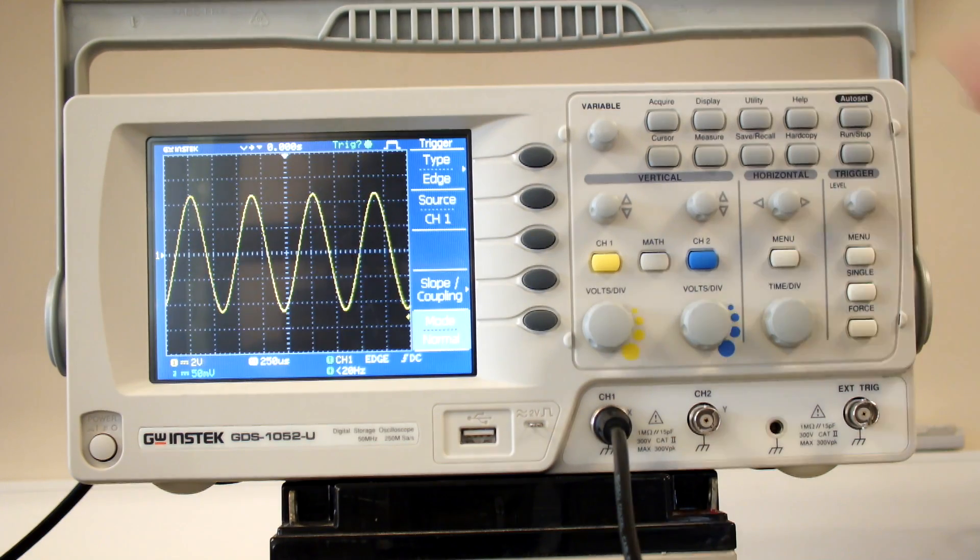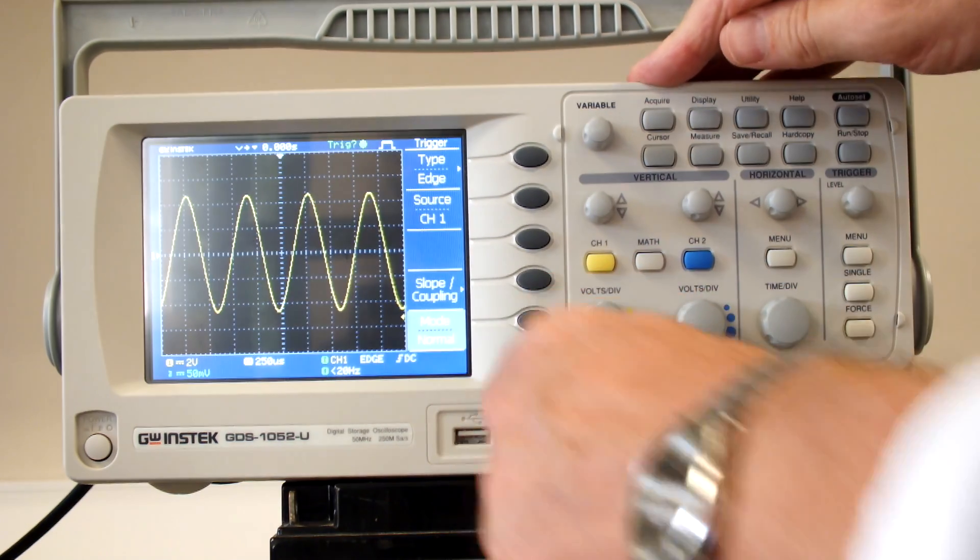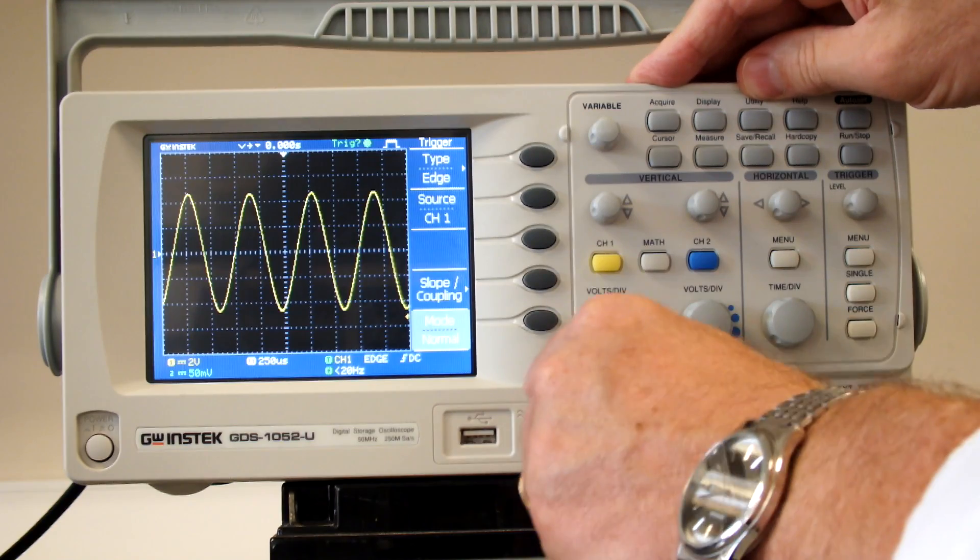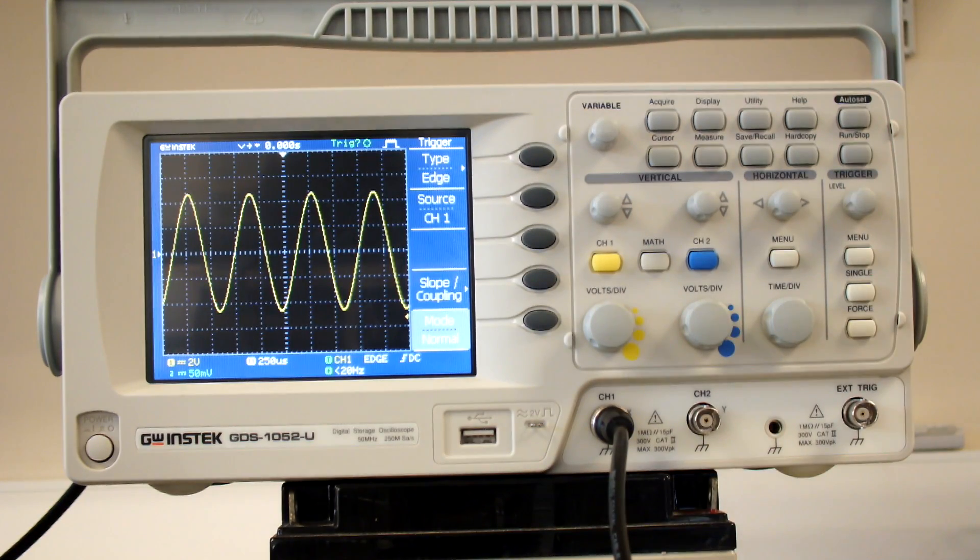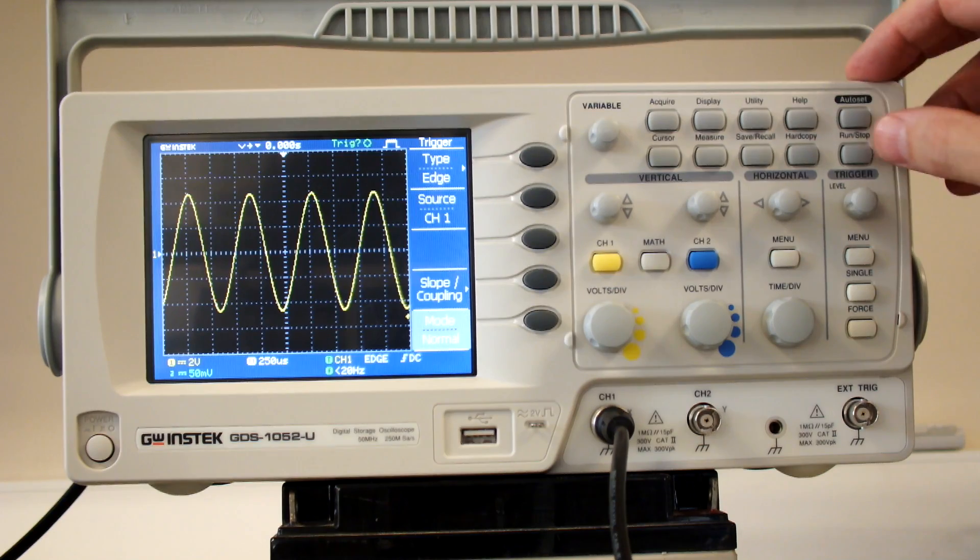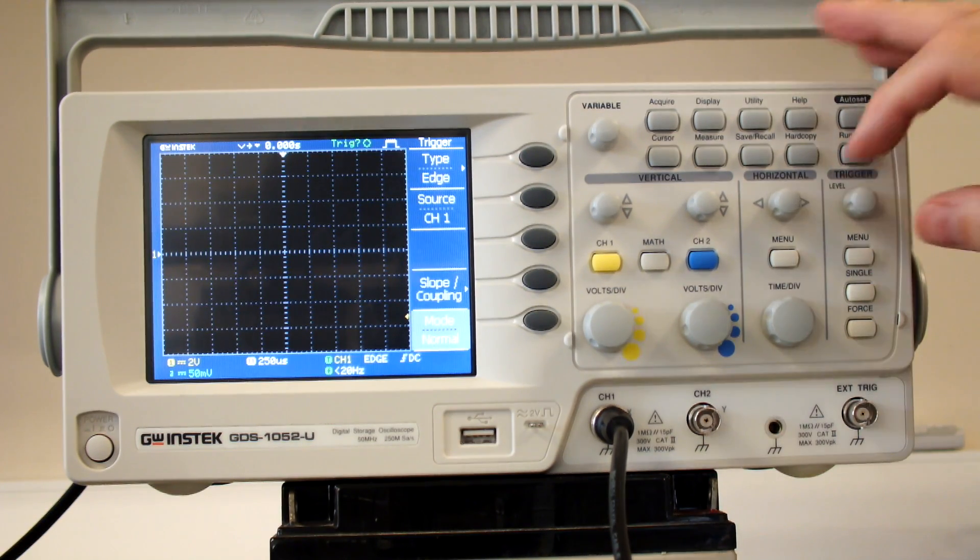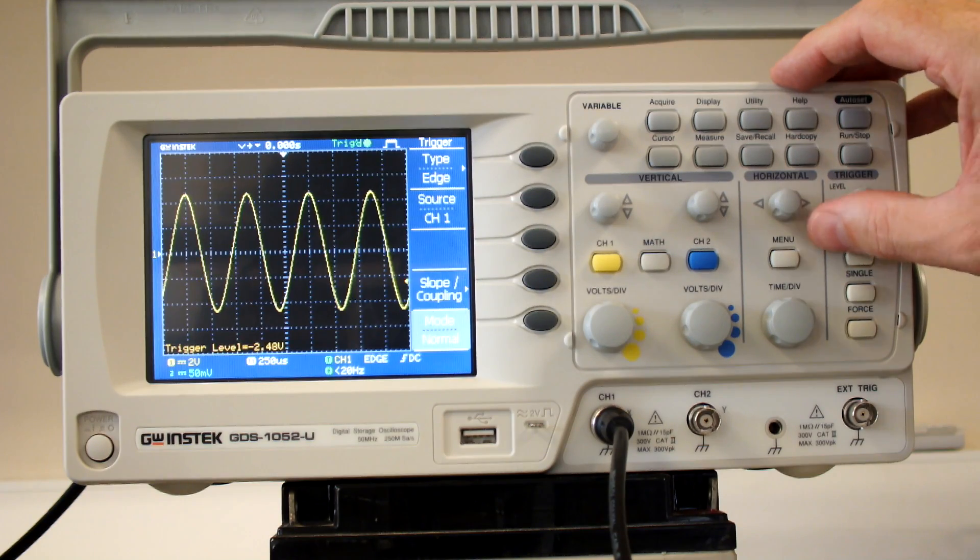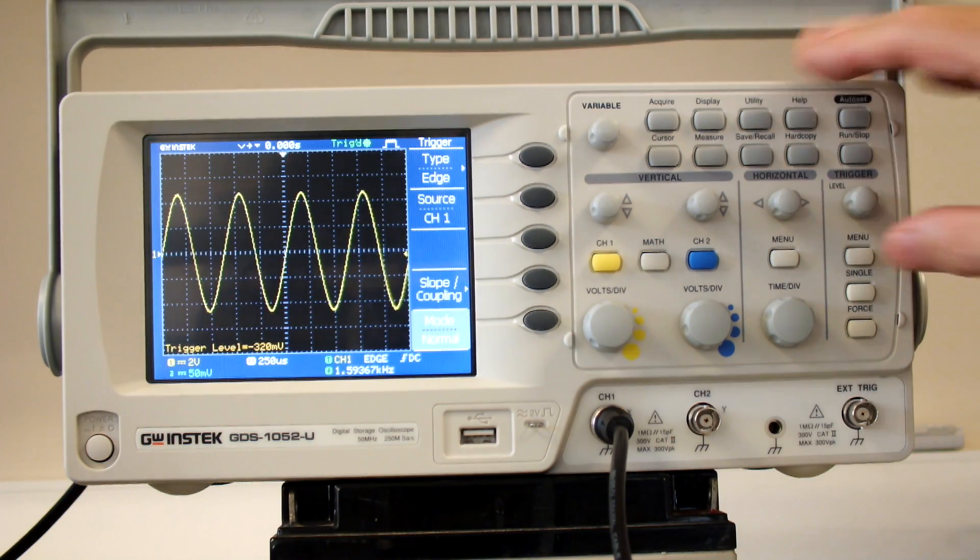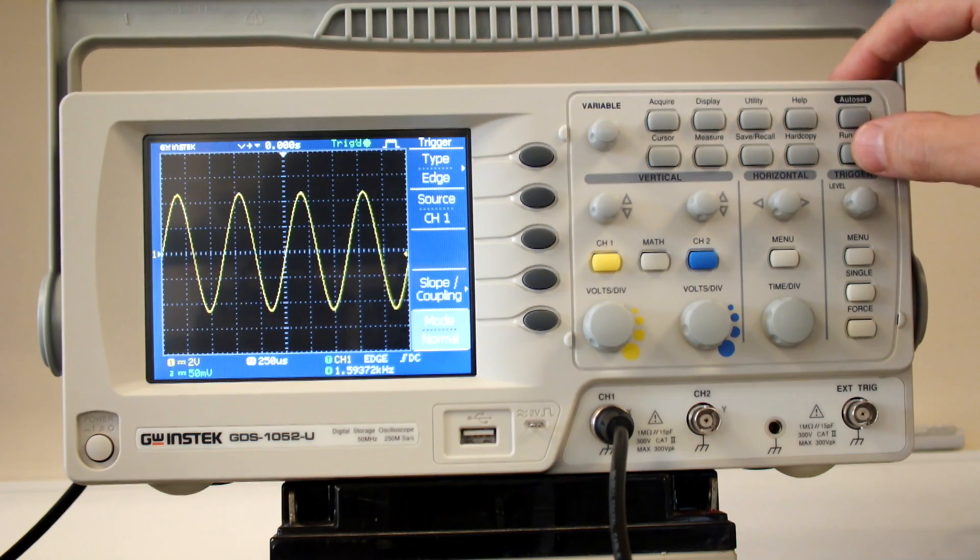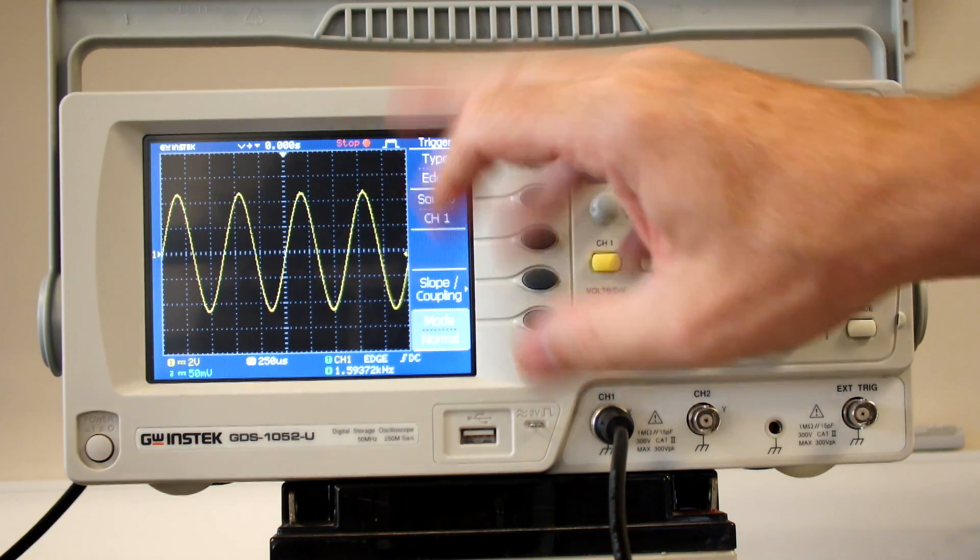If I take this away, there's no signal. It's actually frozen. So put it back on. I'll do run stop. Triggered. It's waiting for a trigger, and I have to move my trigger point up till it finds a waveform. Okay, so the run stop, you can stop things and freeze the trace.